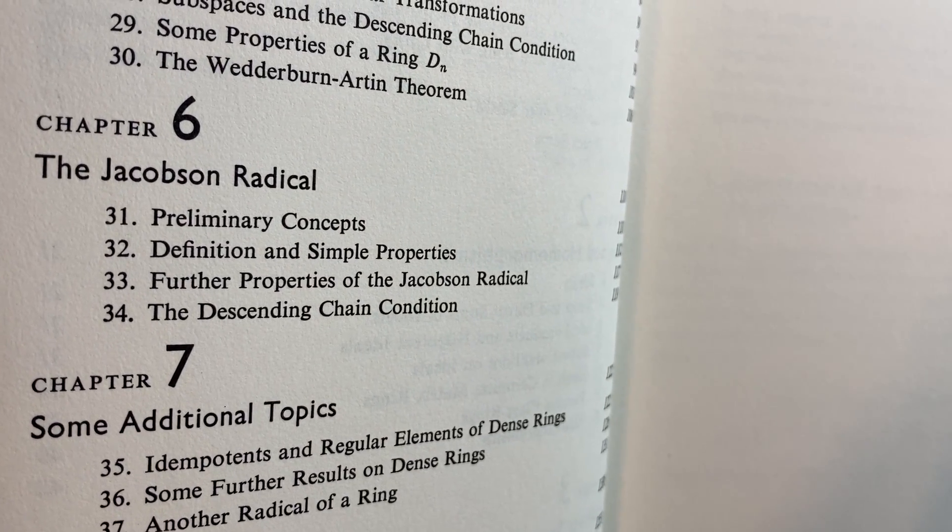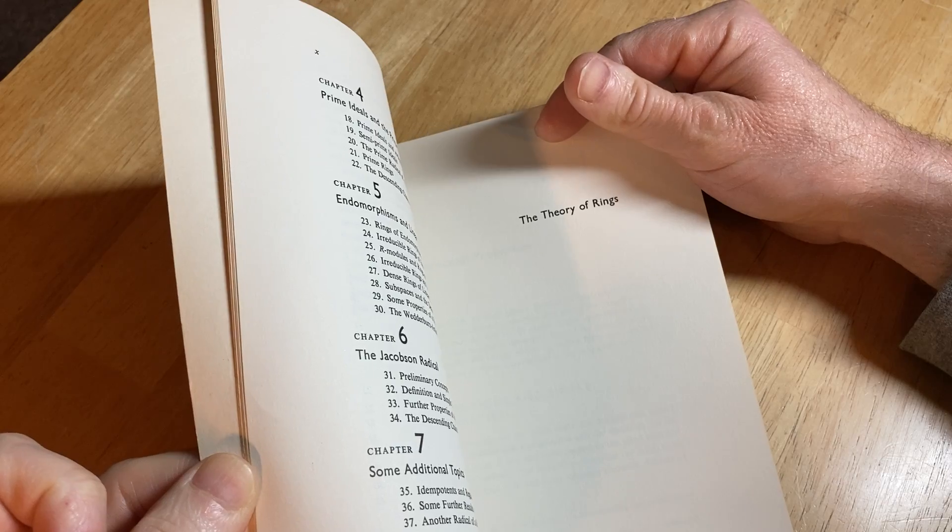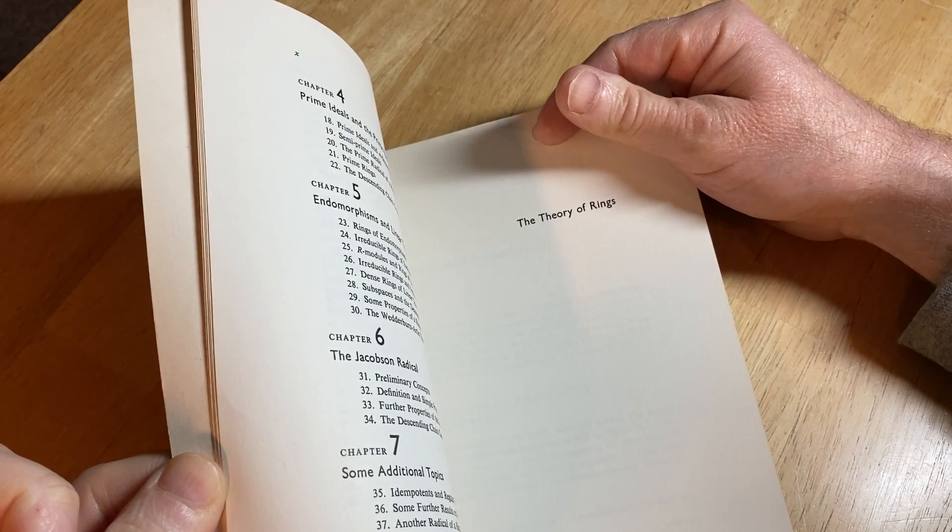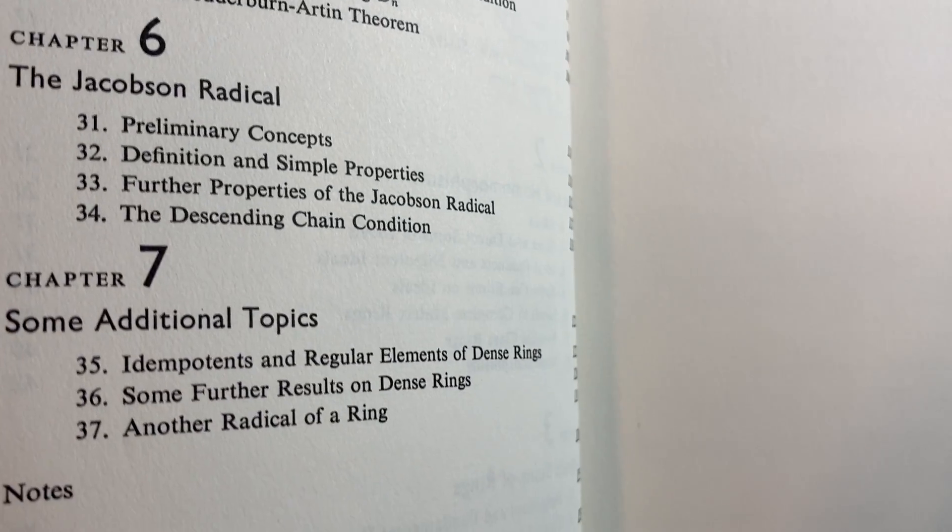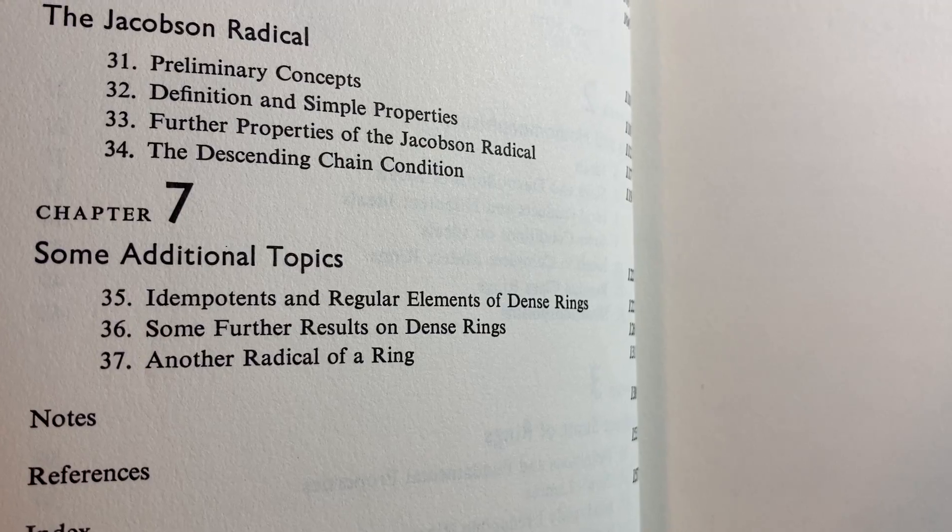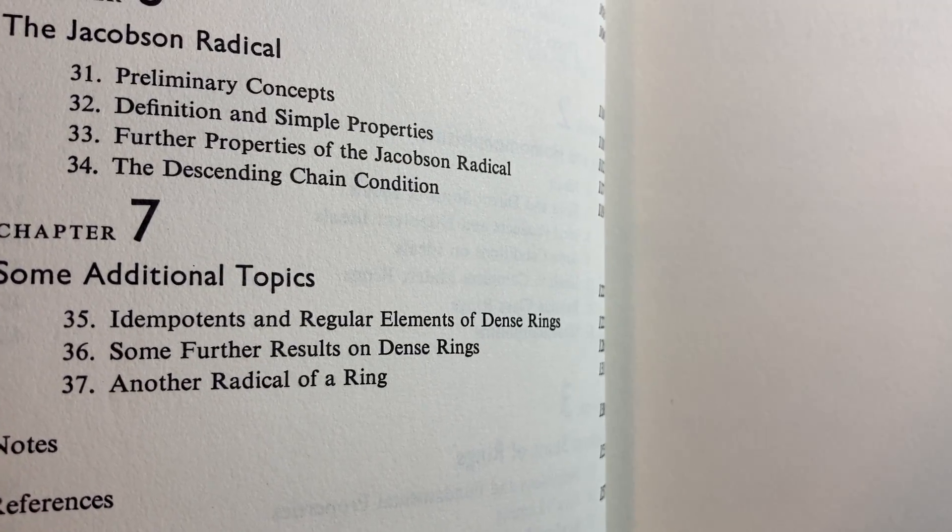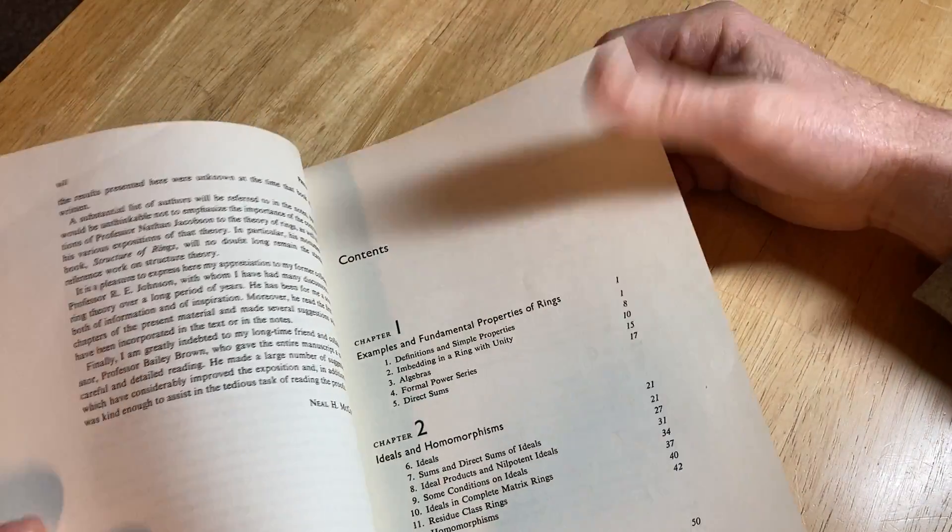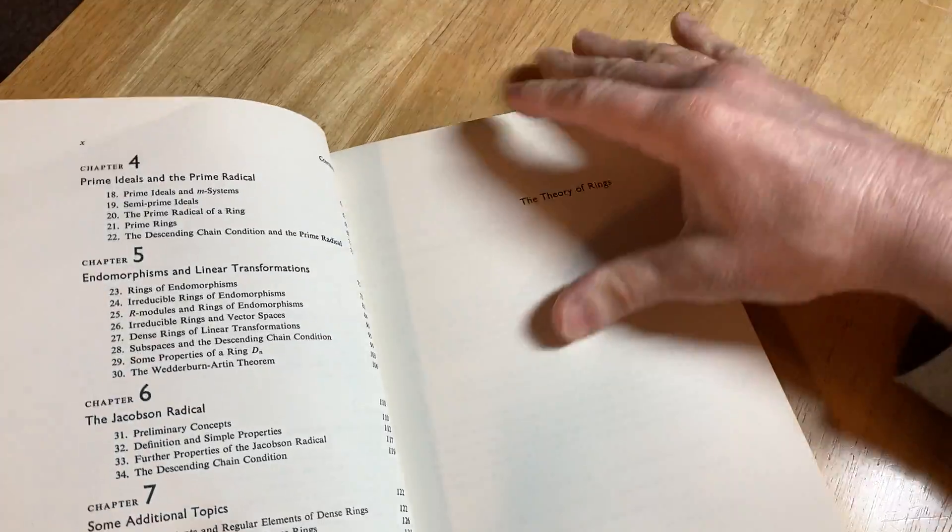The Jacobson radical. Chapter six. So let's go to the beginning which, oh, some additional topics. It says idempotence and regular elements of dense rings. Okay. So let's go to the beginning. The beginning was page one.